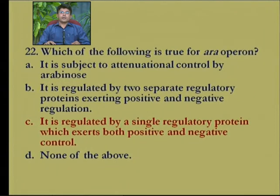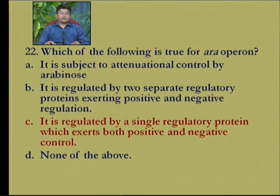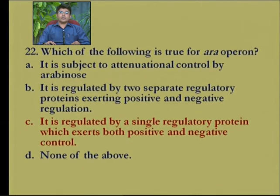Last question: which of the following is true for the ara operon? Option A: it is subject to attenuational control by arabinose — no, attenuational control is not seen in ara operon regulation. Option B: it is regulated by two separate regulatory proteins exerting positive and negative regulation — this is not correct. Option C: it is regulated by a single regulatory protein which exerts both positive and negative control — this is correct. The araC protein is the regulatory protein which exerts both positive and negative control on the expression of ara genes. The correct option is C.